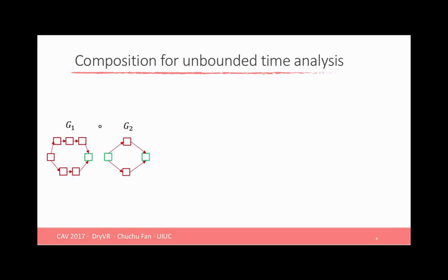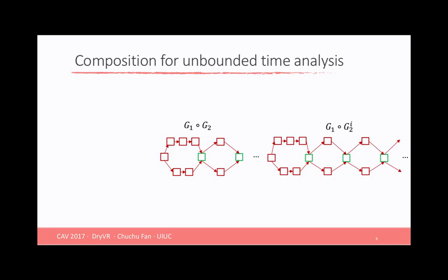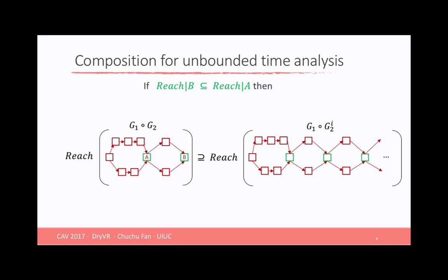The first proof rule is called compositional analysis for unbounded time. We see these two transition graphs, G1 and G2, are composable. If you look at G1, the terminal vertex has the same mode as the initial vertex of G2. So the composed graph will be like you merge these two vertices together. You can also concatenate as many as G2 to this graph. So we will get a transition graph that has unbounded time trace. We have proved that for this G1 composed with G2, if the reach set of B is contained in the initial vertex of G2, that's the A vertex here, then the reach set of the simple version, G1 composed of only one G2, is going to contain the reach set of this unbounded version.